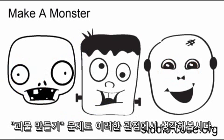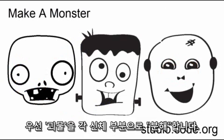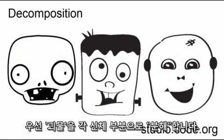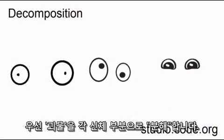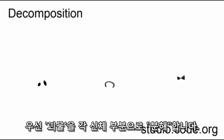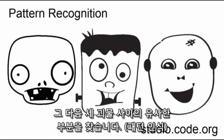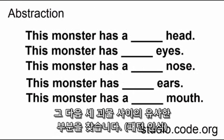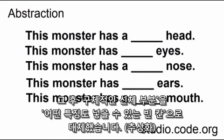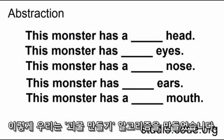Let's return to and review the make-a-monster example. We first decomposed the monsters into parts — eyes, nose, mouth, etc. — and found similarities between the features of the three monsters. We then used abstraction to replace the specific types of body parts with blanks so that any type of feature could be inserted.